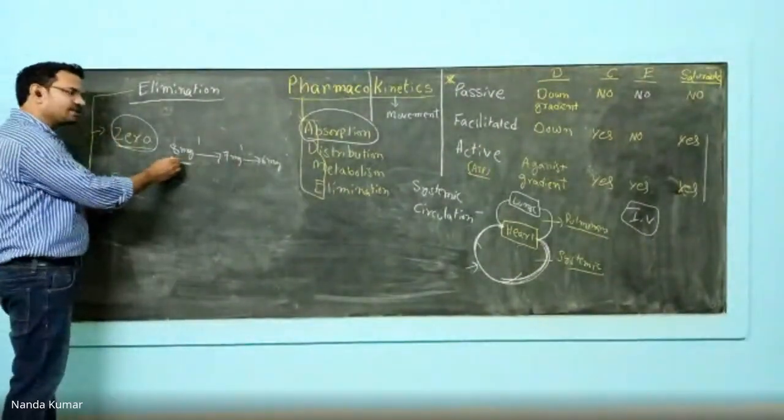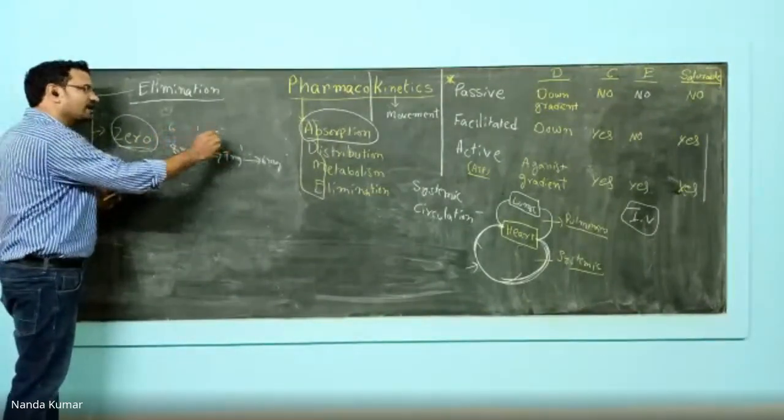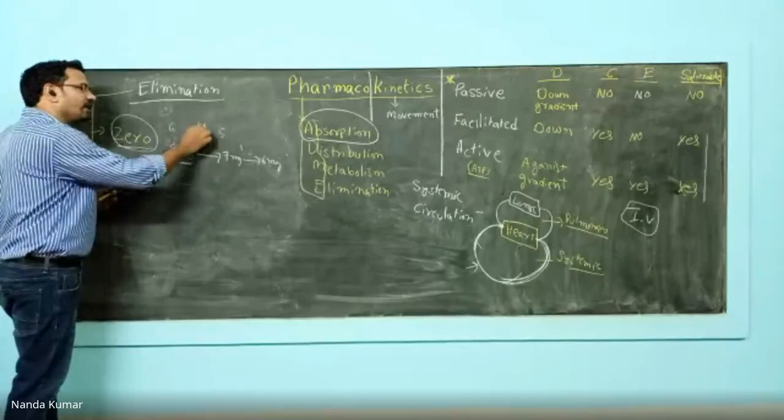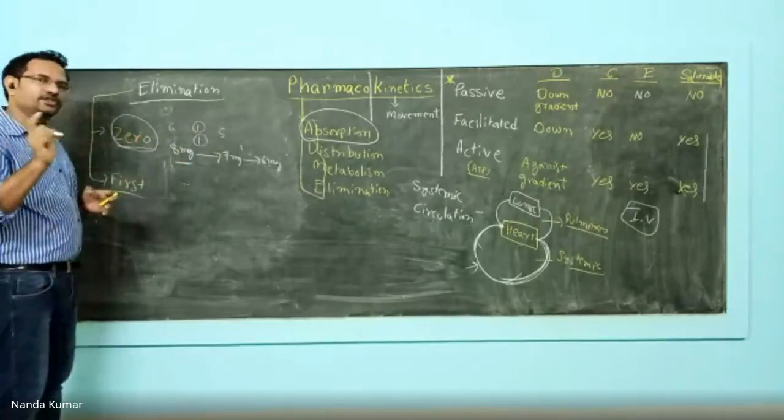Elimination does not depend upon initial amount. Whether it is 8 mg or 6 mg, constant amount will get eliminated - only 1 mg will get eliminated. Constant amount elimination is called zero-order kinetics.